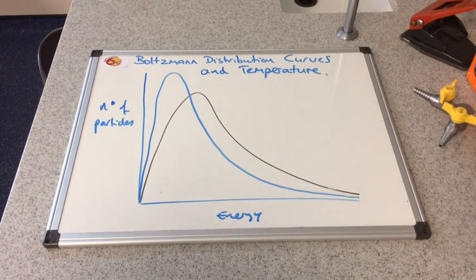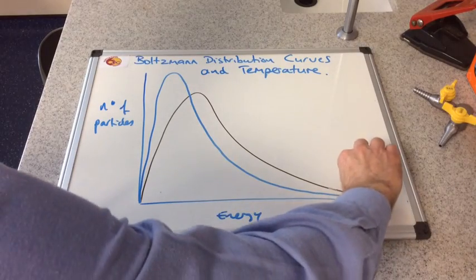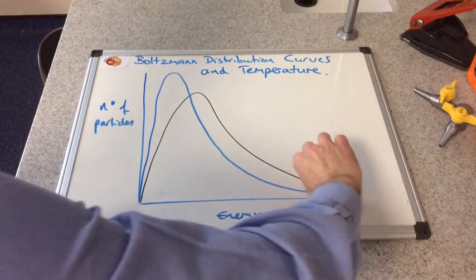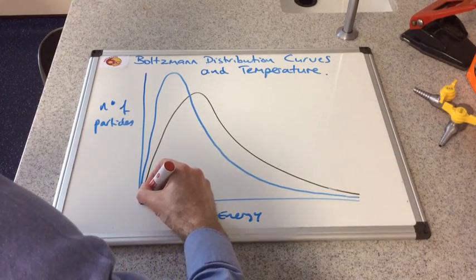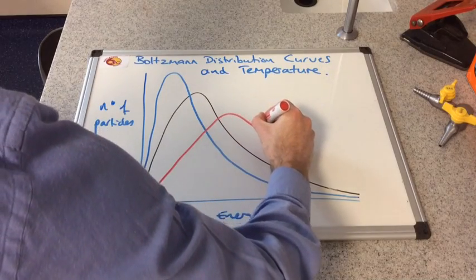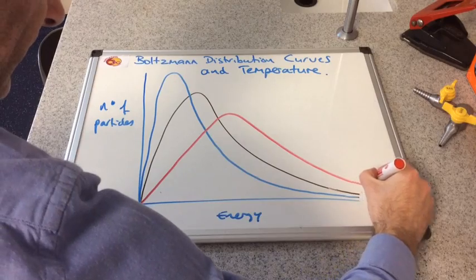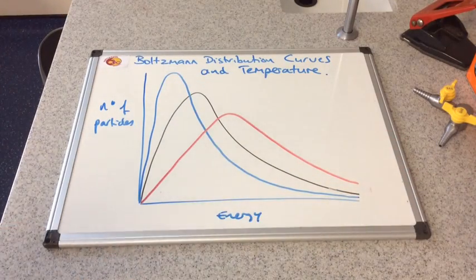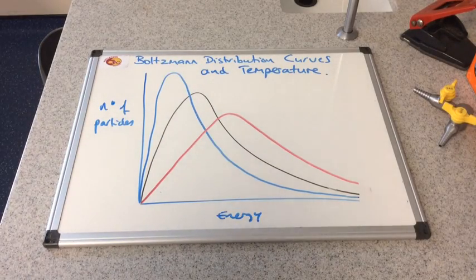And we'll do the same for a higher temperature. So instead of pushing the wire to the left, to the low energy, we're going to extend it and give everything higher, more energy. And so the curve will do this. Just neaten that up there. We'll do something like that.